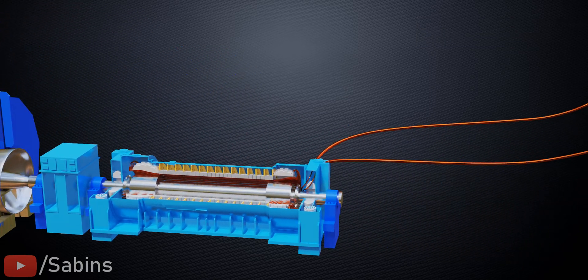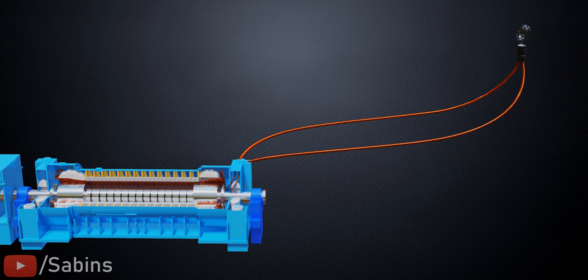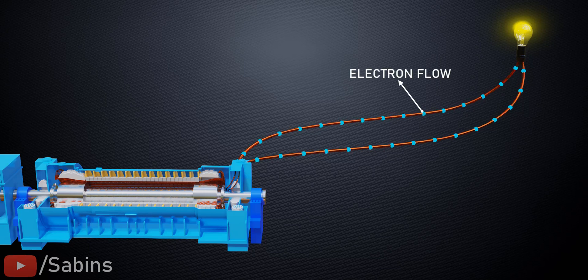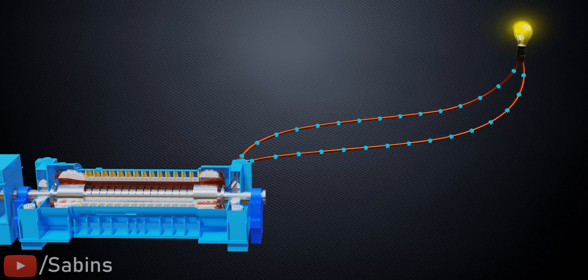Only when the voltage-producing part's terminals are closed will current flow through it, or will the electrons flow in the opposite direction. However, what force causes this electron flow?